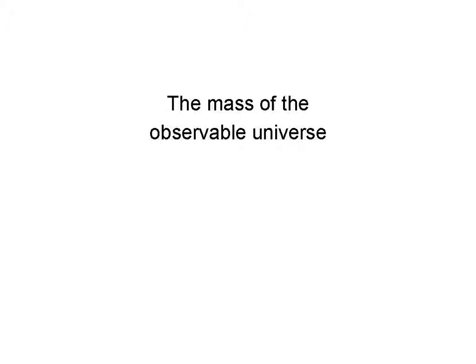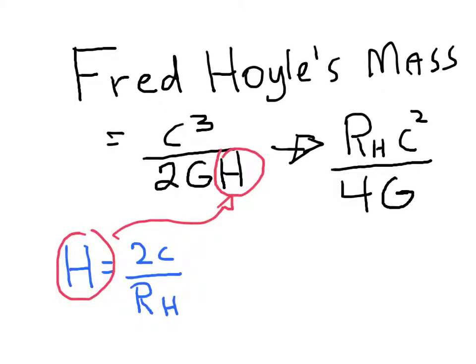Let's look at the mass of the observable universe. For reasons given in the paper, it appears Fred Hoyle's mass calculation is the correct mass of the universe. His value was c³ divided by 2GH times the Hubble constant. We're going to use our value for the Hubble constant and insert it into his equation. We find that the mass of the universe in hyperverse terms is r sub h times c² over 4G.